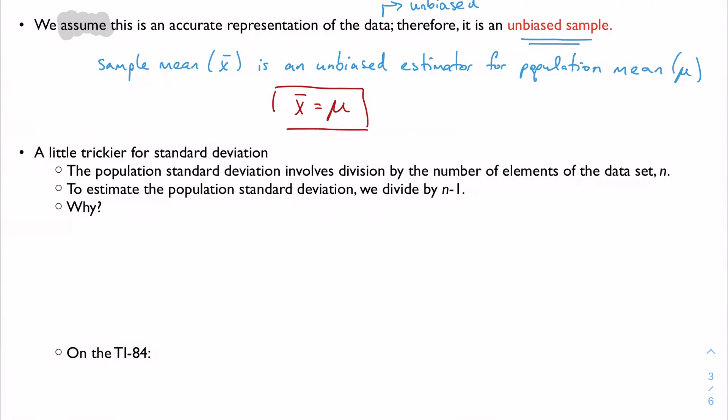Things get a little trickier when we talk about standard deviation. The population standard deviation, if you remember the formula from above, involves division by the number of elements of the data set, n. So our original formula was the sum of all our data points minus the mean squared, divided by the number of elements, n. Well, to estimate the population standard deviation, we're going to divide by n minus 1 instead.